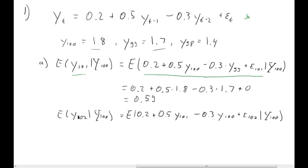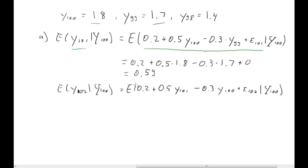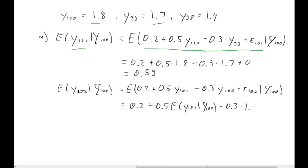Let's evaluate the expectations. The constant comes out as 0.2. Then we have 0.5 times the expectation of y(101) given information at 100, minus 0.3 times the expectation of y(100) given information at 100 — we have that information, that is 1.8. Plus the expectation of the error term at 102 given information at 100, which is zero. Now we just need to establish what E[y(101)|I(100)] is — but we actually just calculated that: it's 0.59.